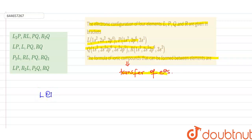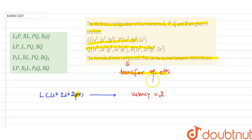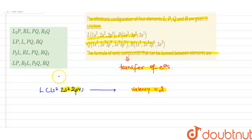If we write the electronic configuration of L, it is 1s2 2s2 2p4. We know that the p orbital can contain a maximum of six electrons. Valency is the number of electrons gained or lost in order to complete its octet. Here the valence shell is 2s and 2p, so in order to complete its octet there must be addition of two electrons — therefore its valency will be 2.